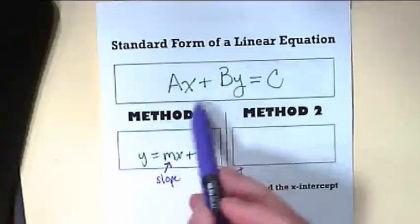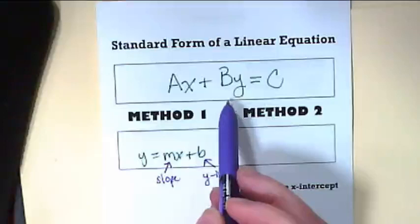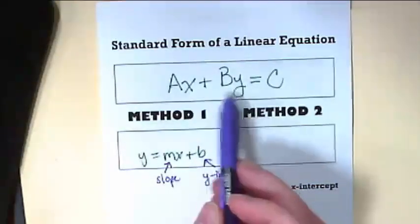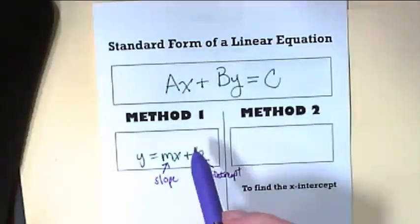In this equation, the capital letters, the A, the B, and the C, in real equations those are numbers and the lowercase x and y stay as x and y. So that's one thing that the two of them have in common.